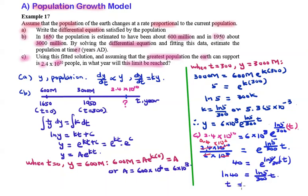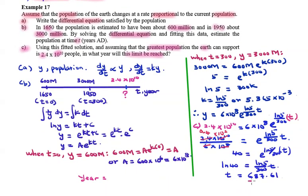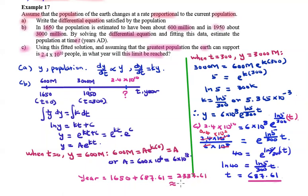By referring to our calculator, t is equal to 687.61. After 687.61 years, the population of the Earth reaches the maximum. Therefore, using the initial year 1650 plus 687.61 equals 2337.61, which is approximately the year 2338.